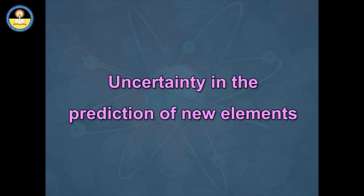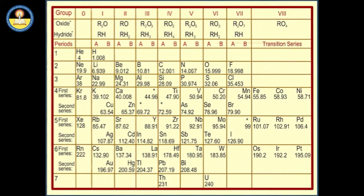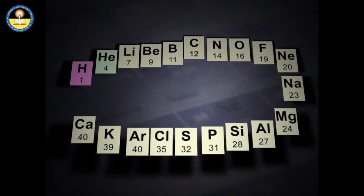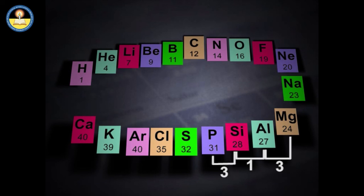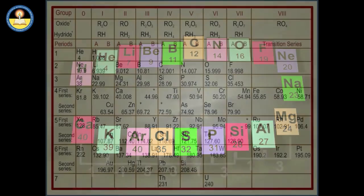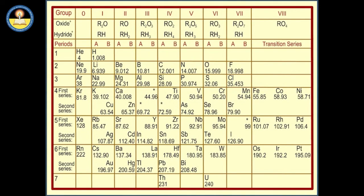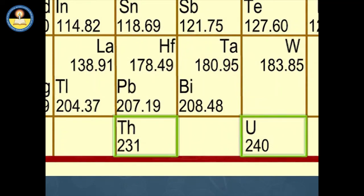Uncertainty in the prediction of new elements: In Mendeleev's periodic table, elements are arranged in increasing order of their atomic masses. But the atomic masses do not increase in a regular manner in going from one element to the next. The difference in atomic masses between two successive elements is small among lighter elements, so it is not possible to predict how many new elements there are, especially among heavier elements.